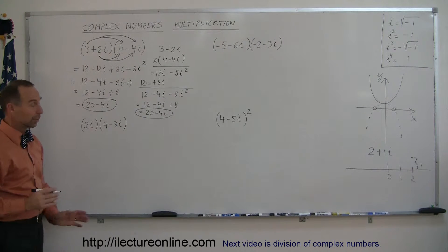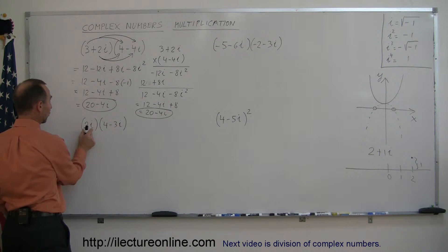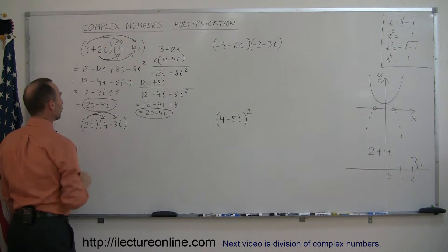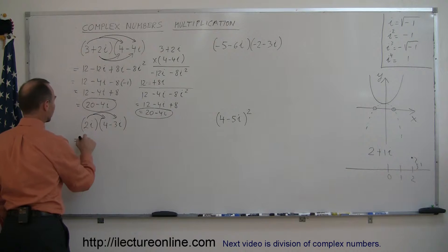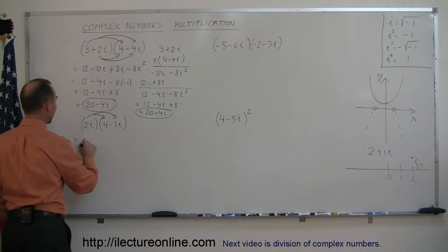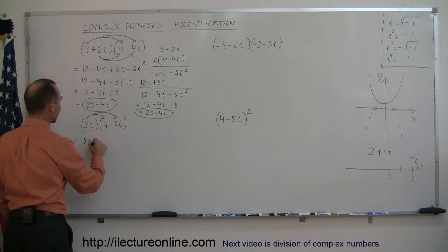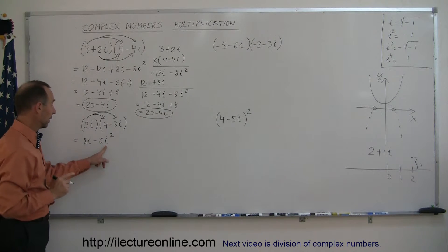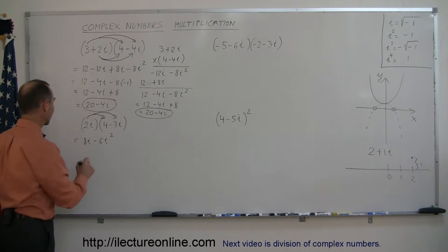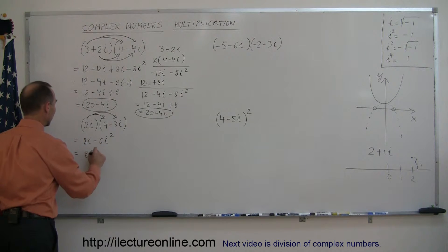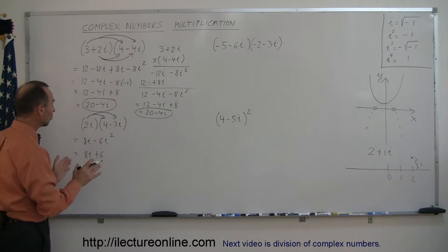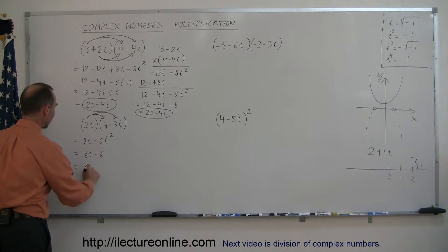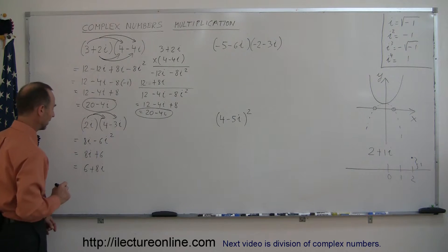Going to our second example, that's actually a little simpler because we only have one term in the first number, so we multiply it with each term in the second number. This is equal to two i times four, which is eight i, and two i times negative three i is negative six i squared. Since i squared is negative one, negative six times negative one is plus six, so this equals six plus eight i as the final answer — writing the real part first, then the imaginary part.